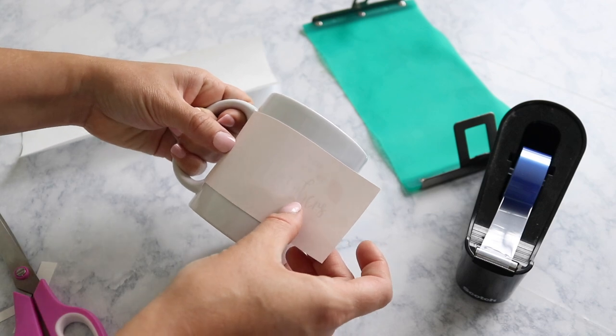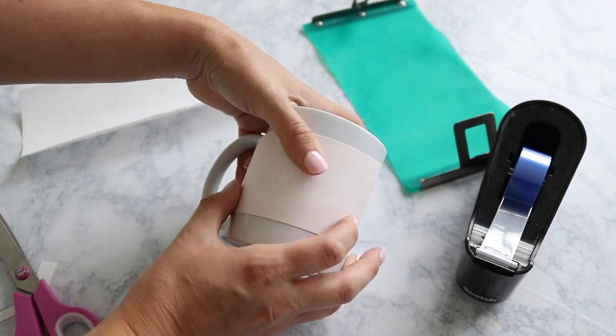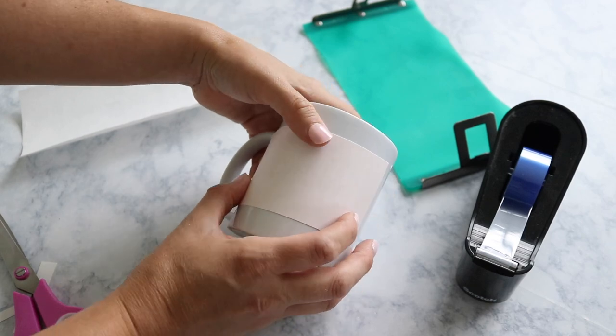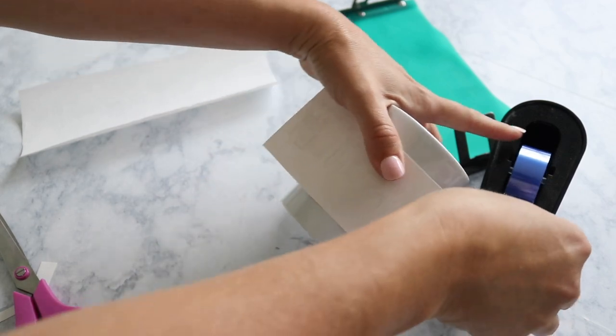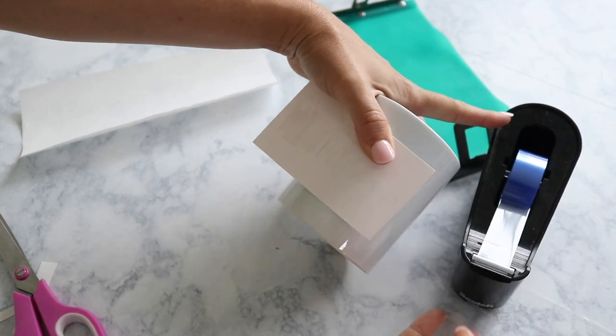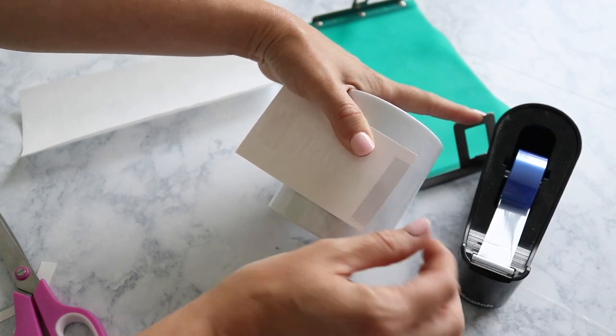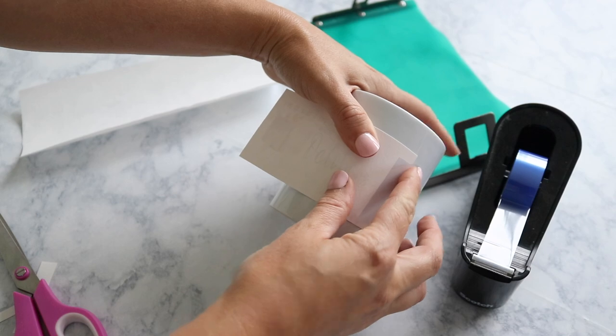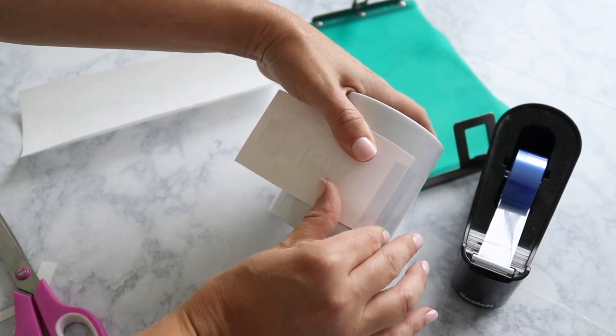I just cut my sublimation paper to size and now I'm placing it where I want it on the mug and then using my heat resistant tape. I'm going to very carefully line it up exactly where I want it and then tape this directly onto the mug.